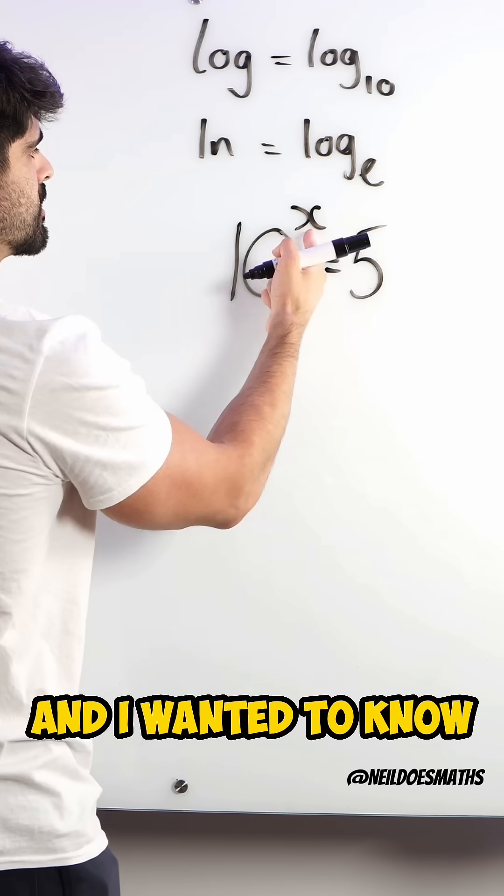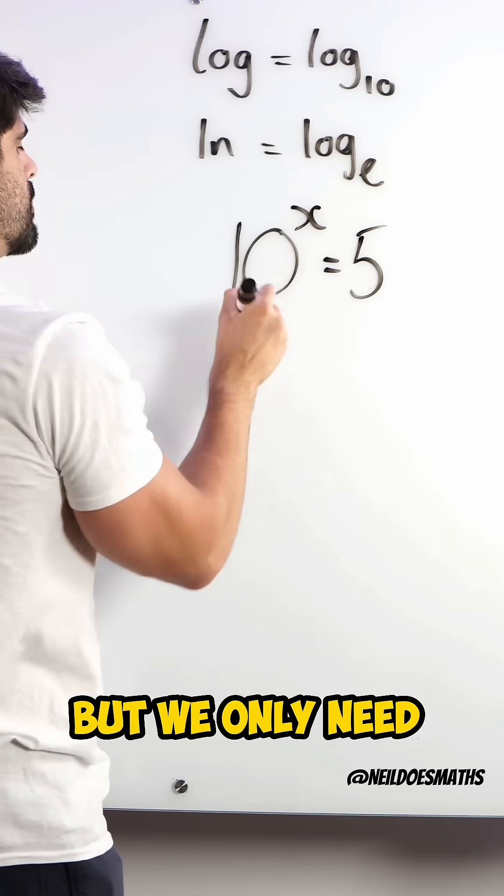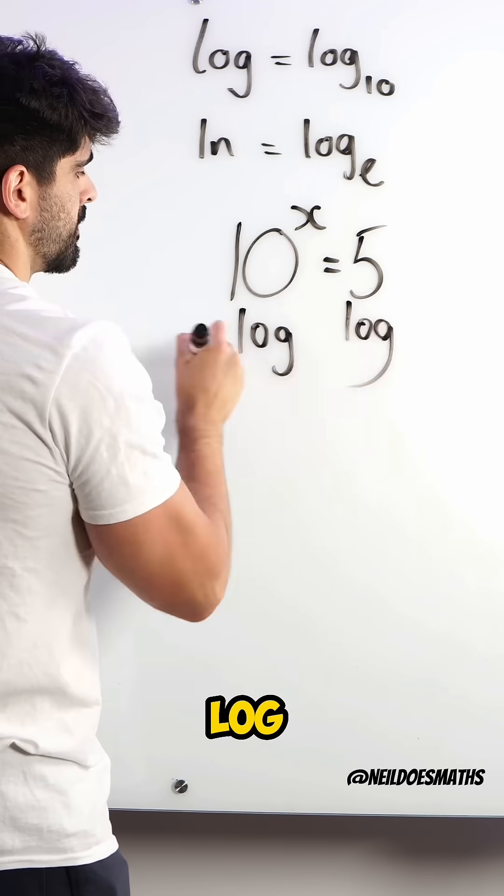So if I was to solve something like this and I wanted to know what x is, I'm going to do log base 10 of both sides. But we only need to say log. Log. Cancel. X is log 5.